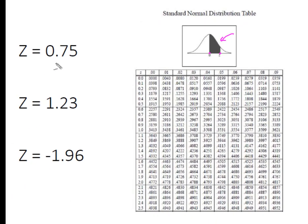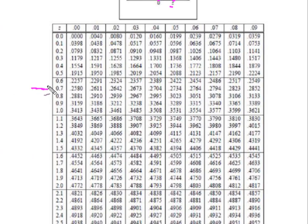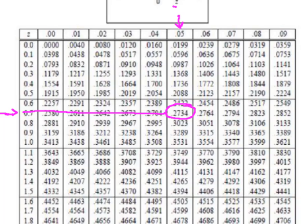If I'm going to find the area where z is 0.75, I'm going to come down here to the 0.7. I'm going to come up here on the column because I've picked up the 0.7 and now I have to find this 5. I see where they intersect and I see that that's 0.2734.